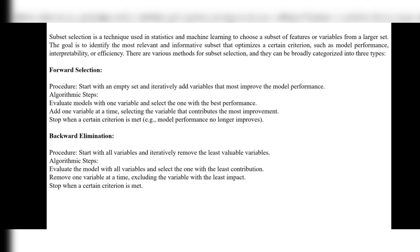Subset selection is a technique used in statistics and machine learning to choose a subset of features or variables from a larger set. If we have a large number of features it is very difficult to choose which one is correct, so subset selection makes our job easy. The goal is to identify the most relevant and informative subset that optimizes a certain criterion such as model performance, interpretability, or efficiency. There are various methods for subset selection, broadly categorized into three types.